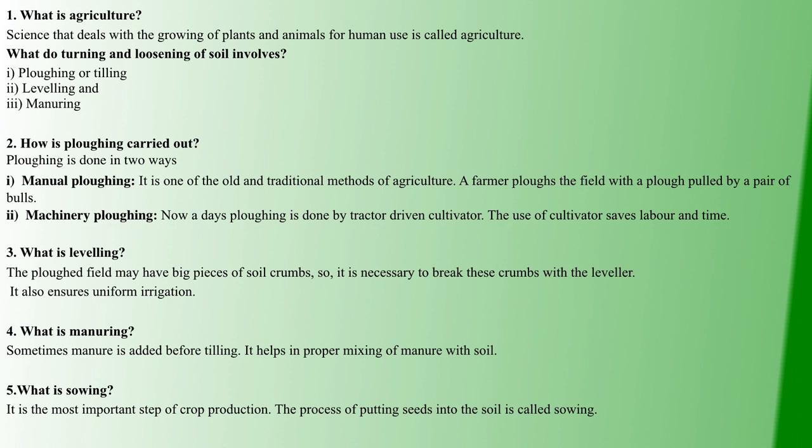First question: What is Agriculture? Agriculture is the growing of plants and animals for human use. Plants and animals are developed by agriculture.